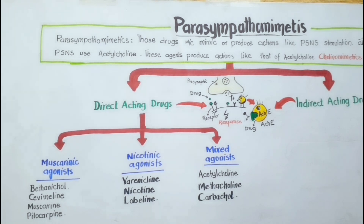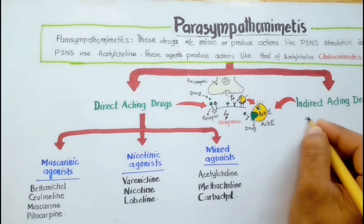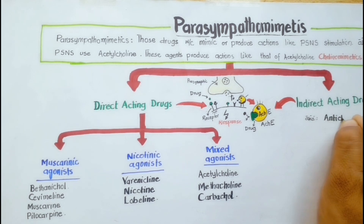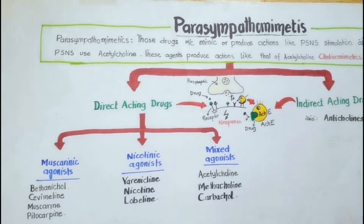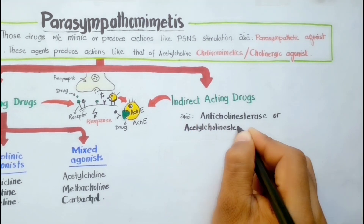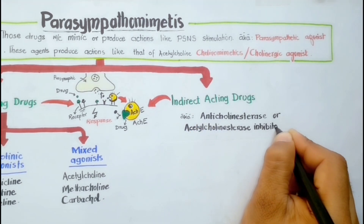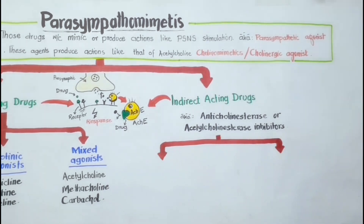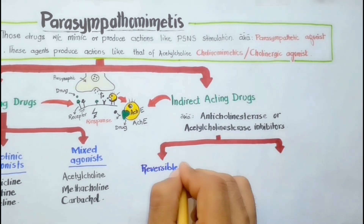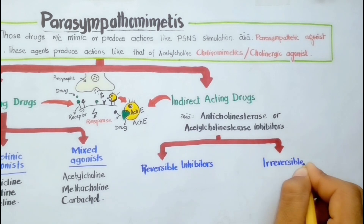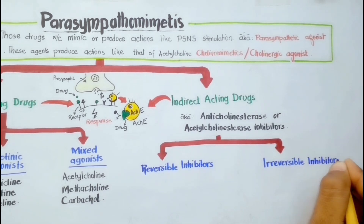After this we have the indirect acting agents, which are also called anticholinesterase or acetylcholinesterase inhibitors. These are classified as reversible and irreversible anticholinesterase agents.